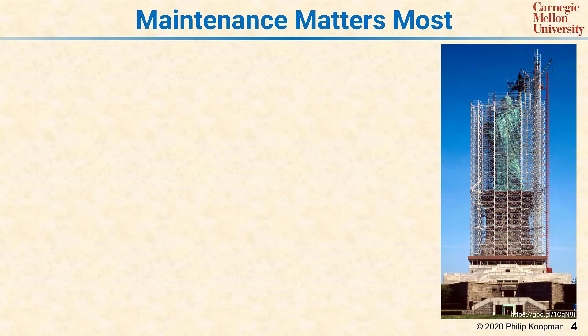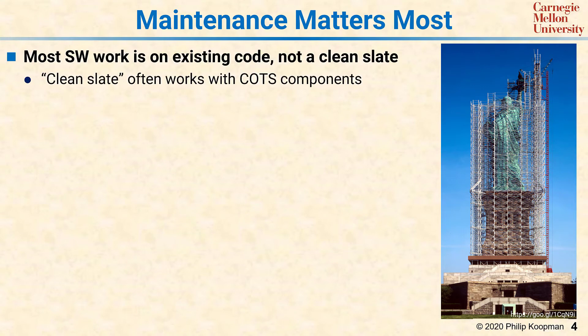The emphasis in training programmers is usually about taking a clean sheet of paper and creating software from scratch. But in the real world, most software doesn't work that way — most software work involves taking existing code and modifying it to add features, change purpose, and so on. Even if you have a supposed clean slate, you don't write all the code. It's very common to take existing components and plug them together, with most new code writing being glue between components. This is especially true using open source components.